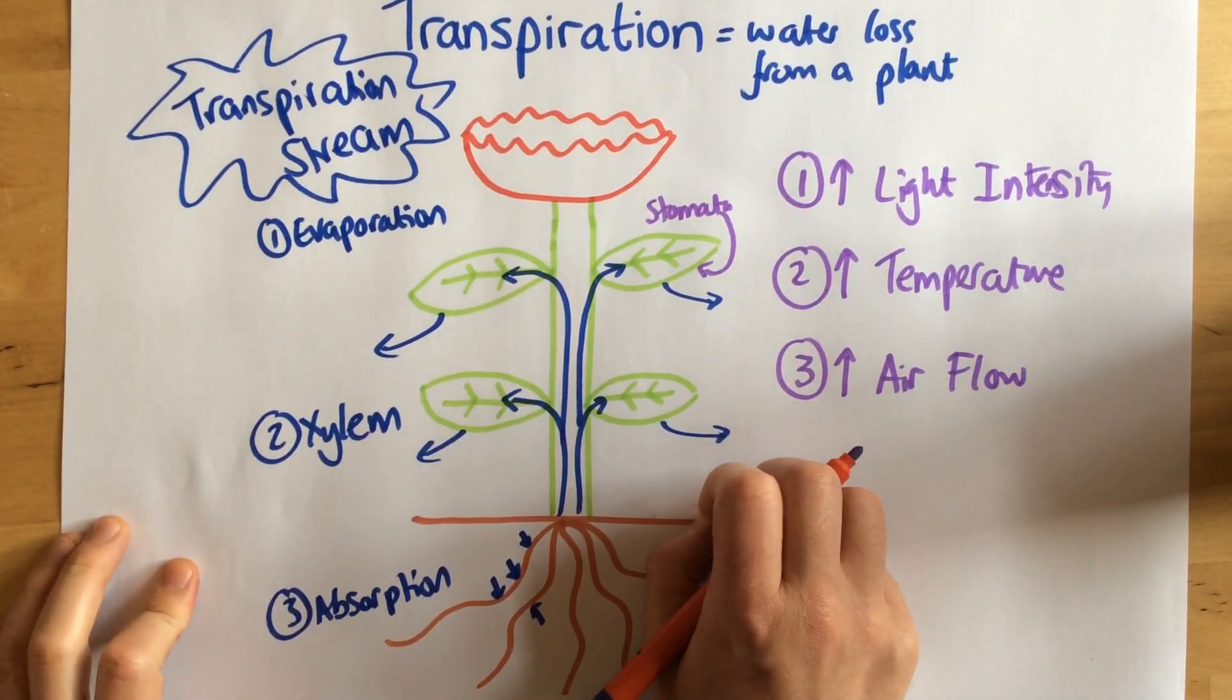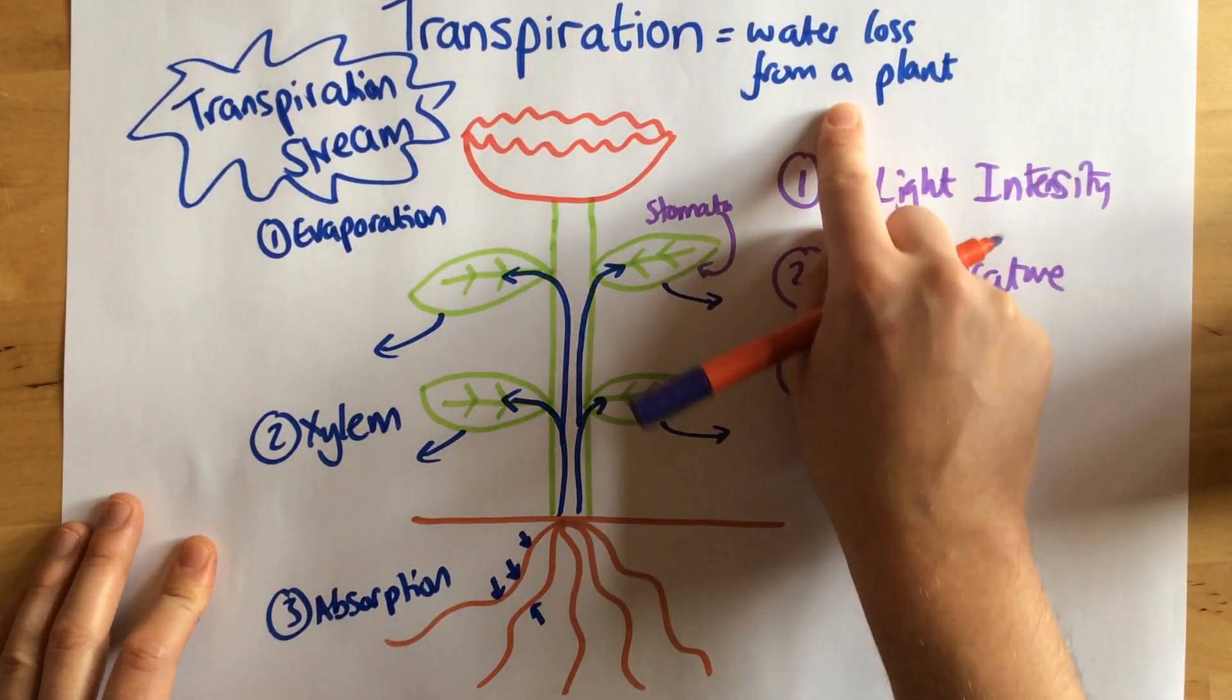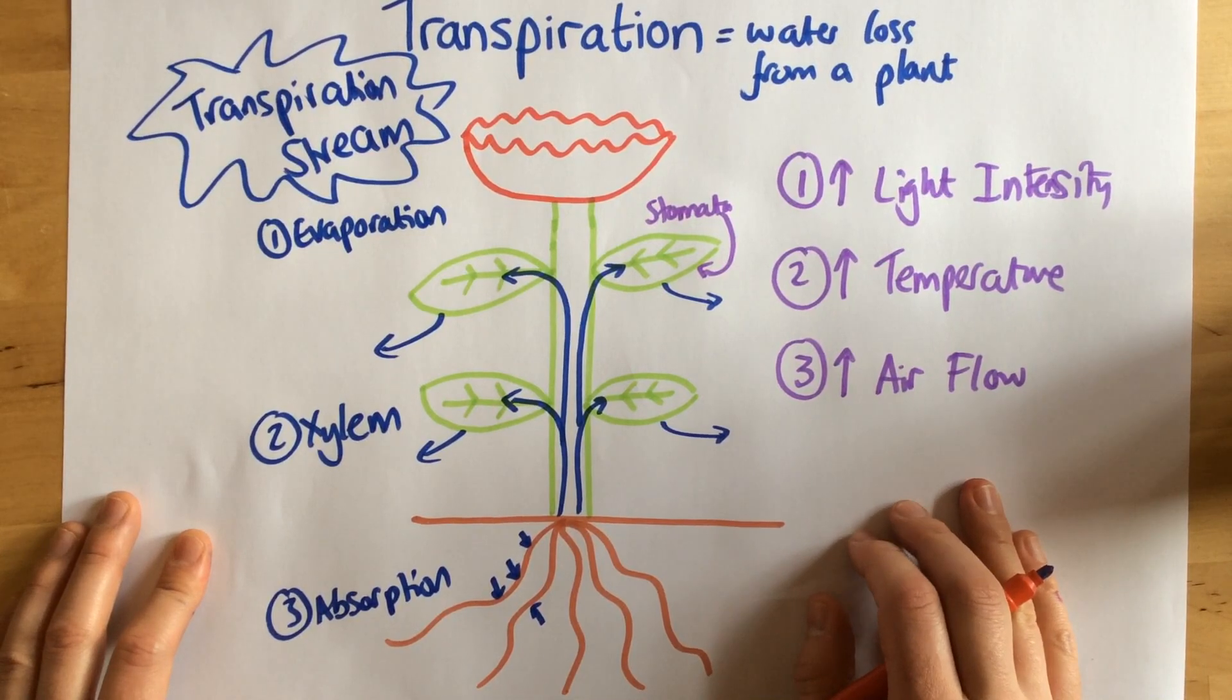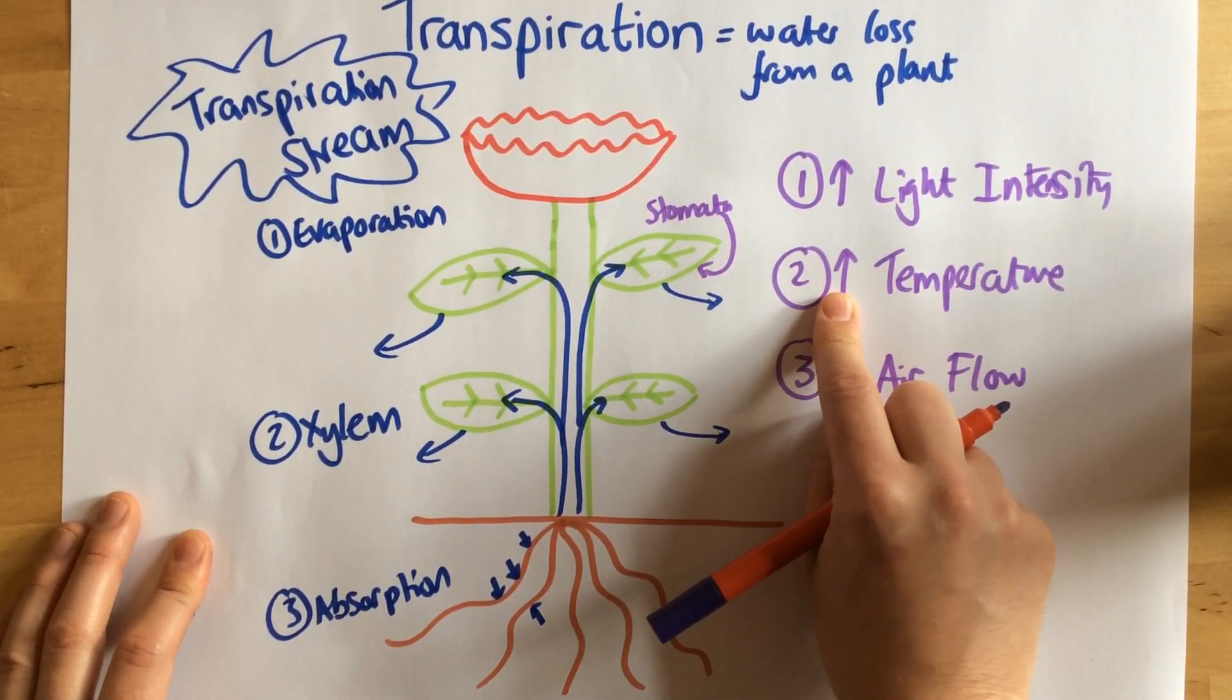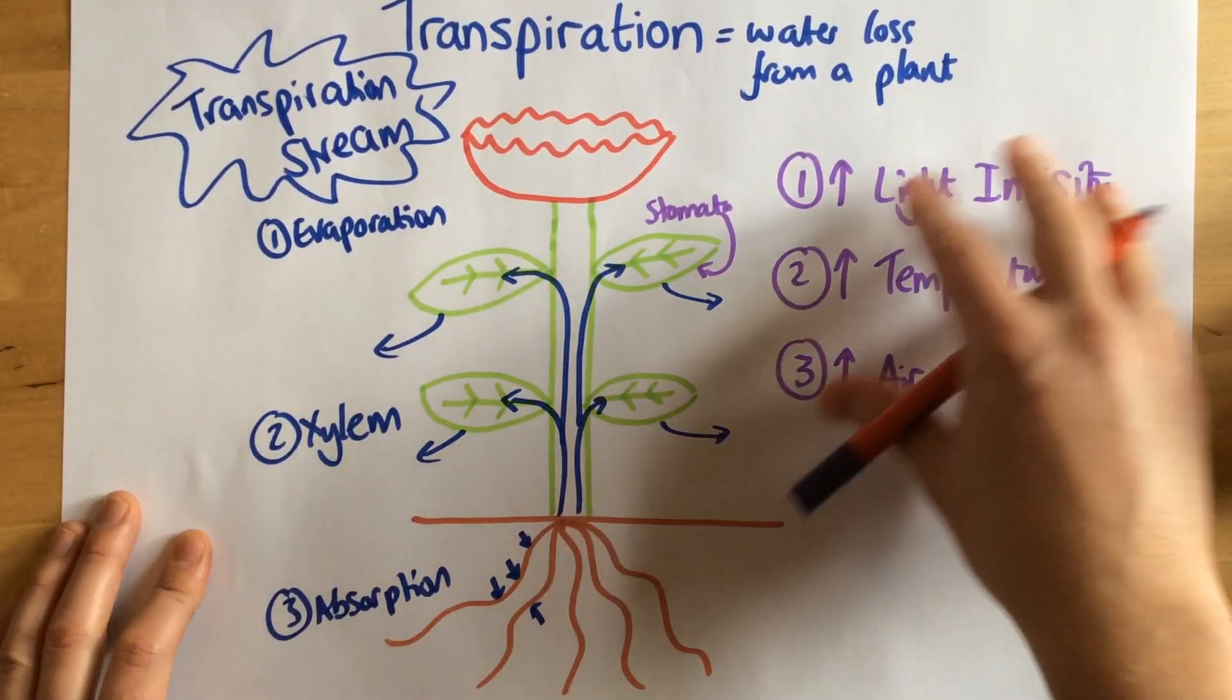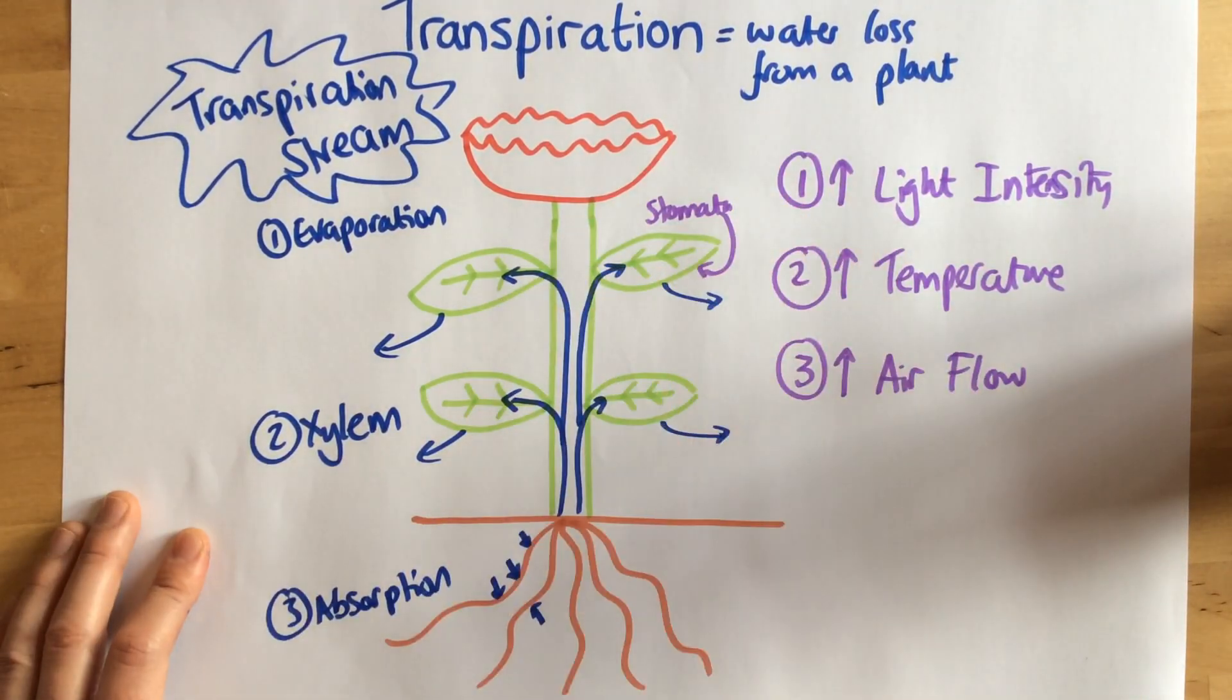Now the way that I always remember these conditions is it's an ideal day to dry your clothes on the line. For example, it's a nice light day, a sunny day, high temperature and a lot of airflow—your clothes are going to dry quickly. And these are the exact same conditions that give a good fast rate of transpiration as well.